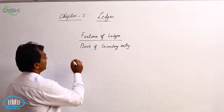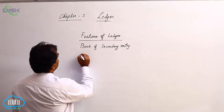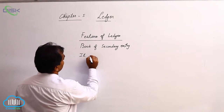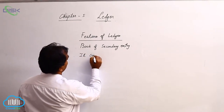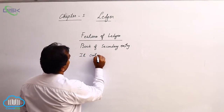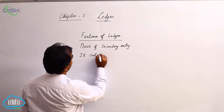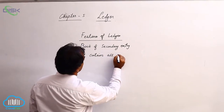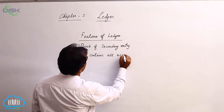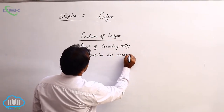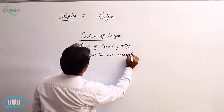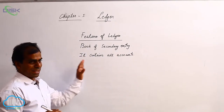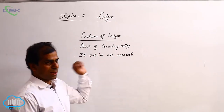Next feature: the ledger contains all accounts. Now what does it mean that it contains all accounts?